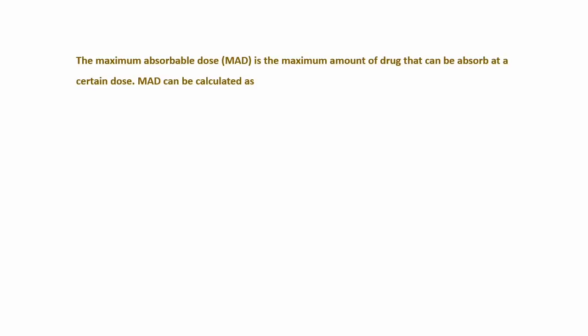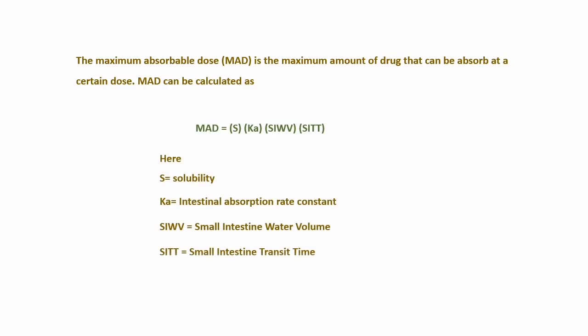Maximum Absorbable Dose (MAD) is the maximum amount of drug that can be absorbed at a certain dose. The formula for calculating MAD is: MAD = S × Ka × SIWV × SITT, where S = solubility, Ka = intestinal absorption rate constant, SIWV = small intestine water volume, and SITT = small intestine transit time। इस formula से आप समझ सकते हैं कि solubility, absorption और permeability एक दूसरे से कैसे connected हैं, which finally affects the drug's biological action।